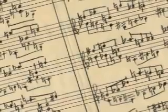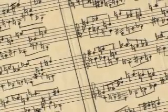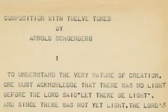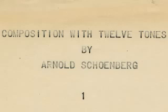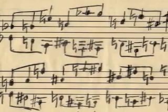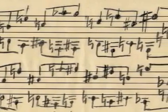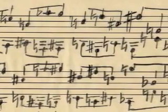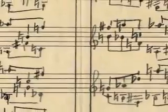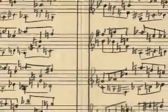Schoenberg's solution, as simple as it was in genius, resided within the very forces he had unleashed. Each piece was to be created from a specific ordering of the twelve pitches of the chromatic scale, called a twelve-tone row. The melodic and harmonic dimensions of a work were thus derived from this Grundgestalt, or basic shape. To ensure the integrity of this twelve-tone universe, no pitch was to be repeated until all the remaining eleven had been sounded.